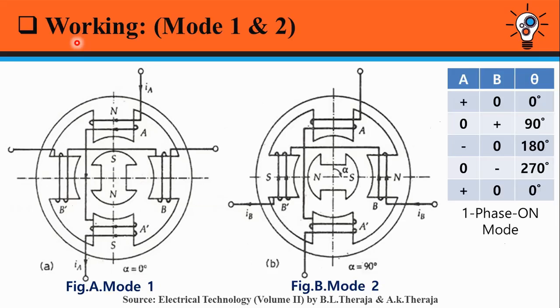Now we will take a look at working of permanent magnet stepper motor. I have divided the working of permanent magnet stepper motor in four modes. Firstly, we will take a look at mode 1 and mode 2.